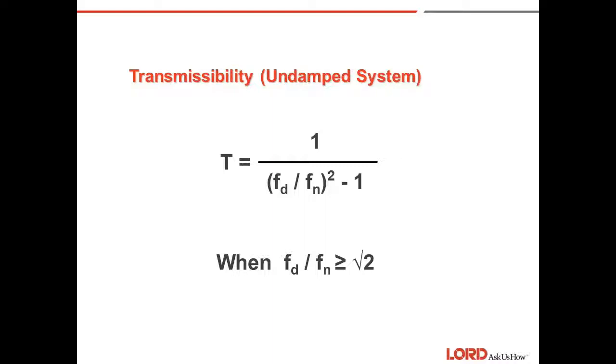Transmissibility, or T, is equal to the output over the input and is dimensionless. Vibration output and input may be measured as motion, force, velocity, or acceleration. The transmissibility of a rubber spring is a function of the relationship of the input frequency to the natural frequency and the amount of damping in the elastomer.